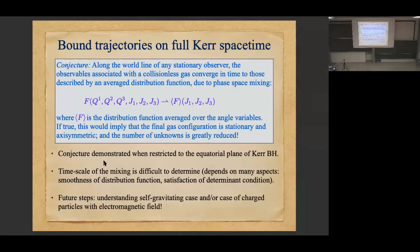The conjecture is: if you look at bound trajectories in the full curved spacetime, and a stationary observer observes a collisionless gas propagating on the exterior, then he or she will see the configuration relax. Space-time observables like the current density or stress-energy-momentum tensor will converge to those obtained from a distribution function that is obtained by averaging out the angle variables — that is, f converges weakly to its angle-averaged version. This has been demonstrated for the equatorial plane of Kerr or Schwarzschild.